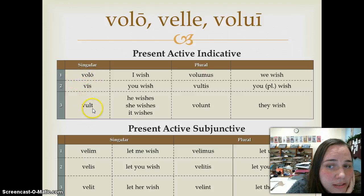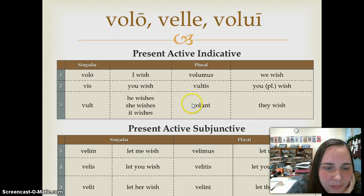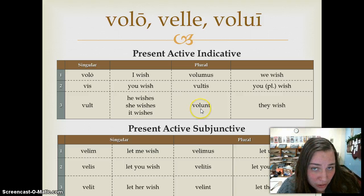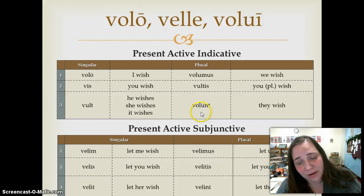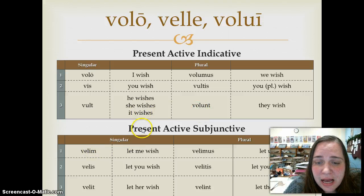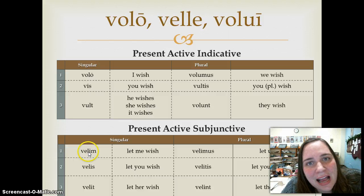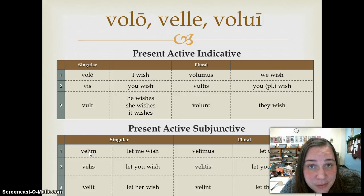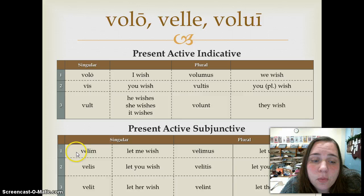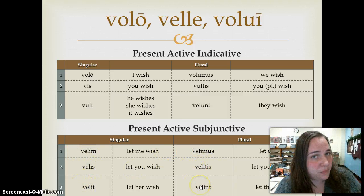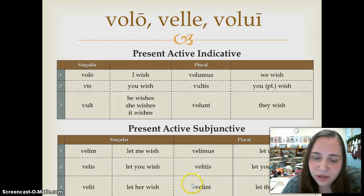Volo, vis, vult, volumus, vultis, volunt. The present active subjunctive looks like the conjugation of sum in the present subjunctive — sim, sis, sit, simus, sitis, sint — so: velim, velis, velit, velimus, velitis, velint. It follows a pattern, just not the pattern you expect.